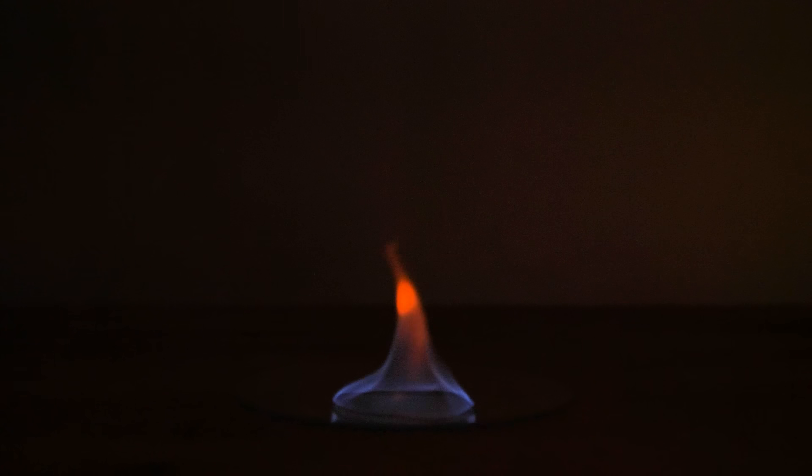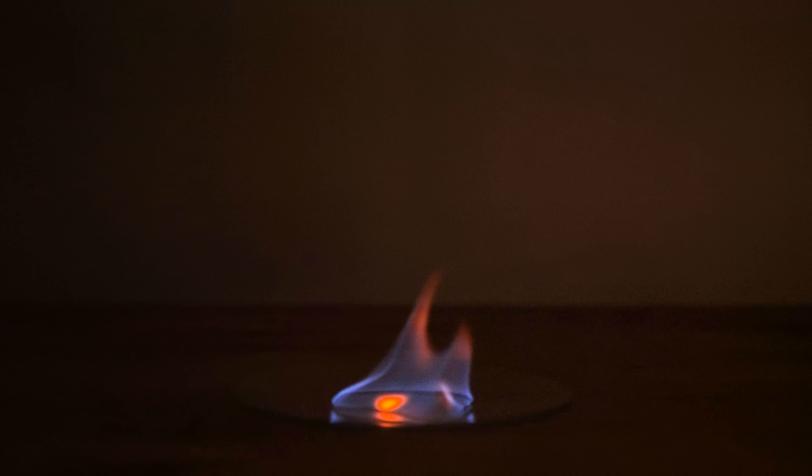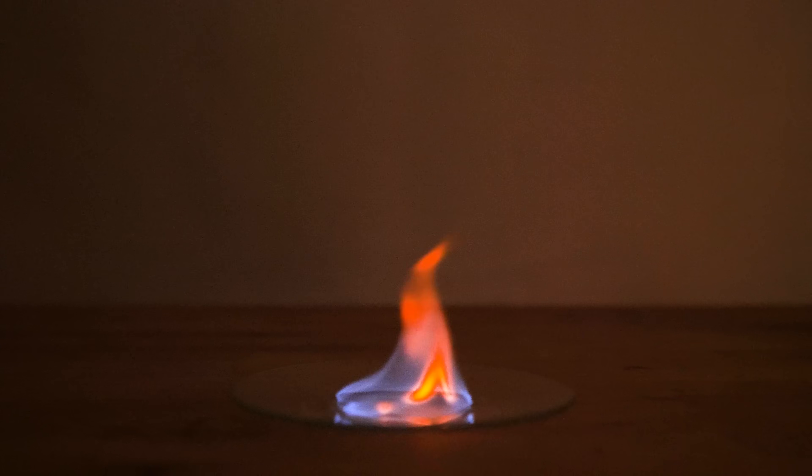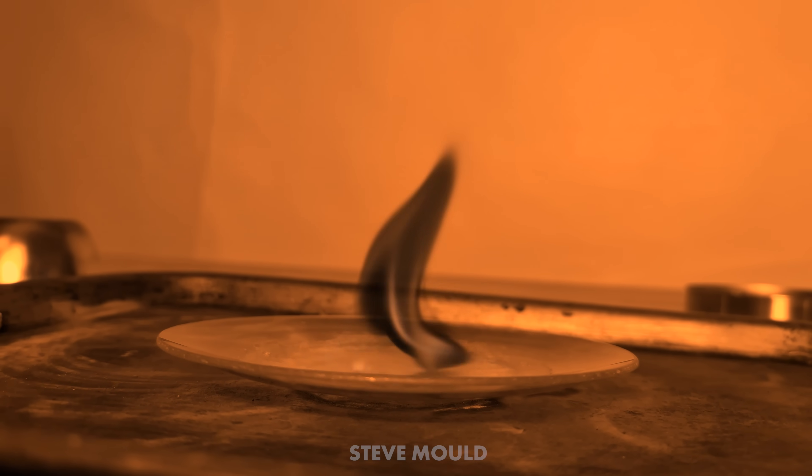So all the time in that flame, you've got a mixture of excited sodium and sodium in the ground state. And it's those ground state sodium atoms that make the trick work. Because remember, those ground state sodium atoms are really good at absorbing 590 nanometer photons, which is the exact photons that are being produced by the sodium streetlight. And of course, if the flame is absorbing photons, it's going to look dark.